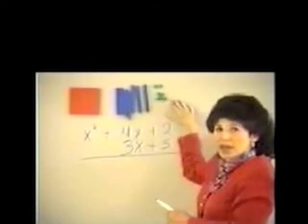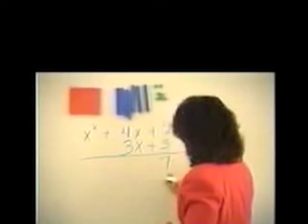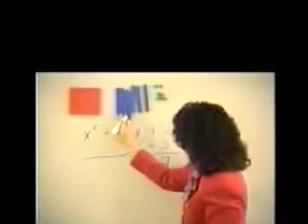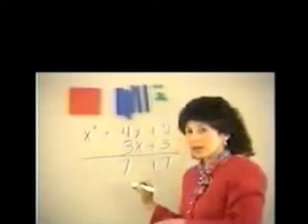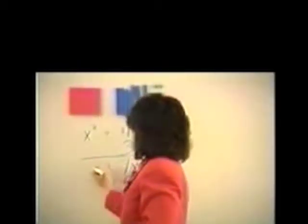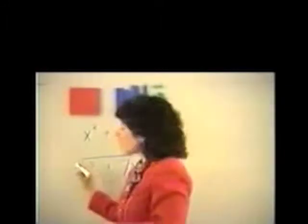We put it together. How many of these do we have? Seven. What kind? Units. How many of these? Three, four, five, six, seven. What kind? X. How many of these? X square. And we have one.